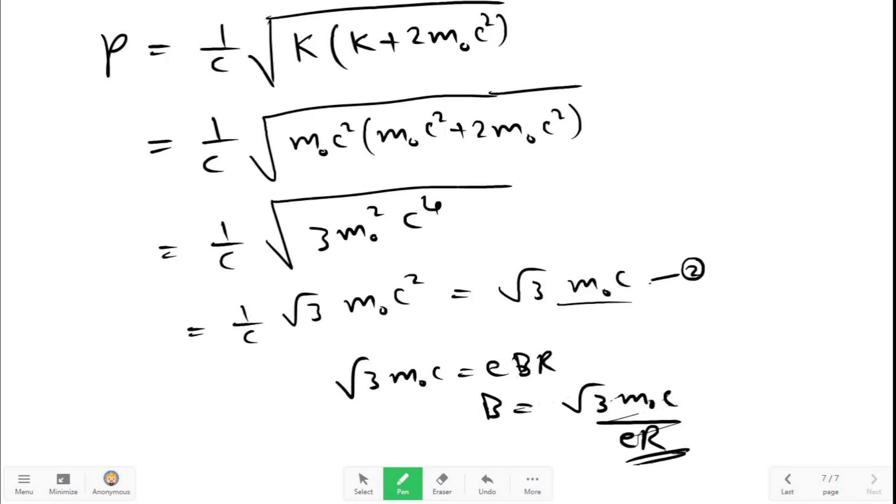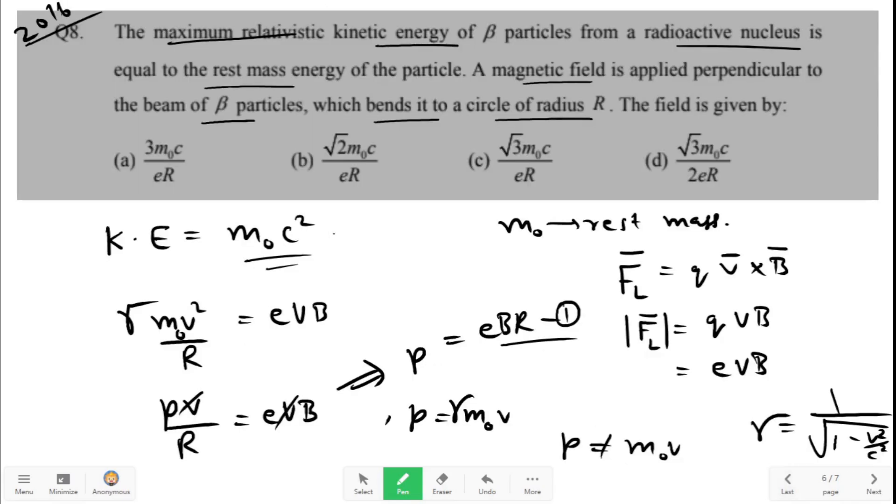So √3 m₀c/eR is your value for the correct answer. The correct answer here is option C. Thank you.